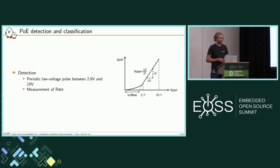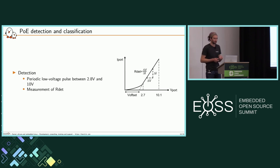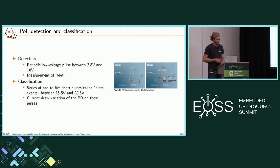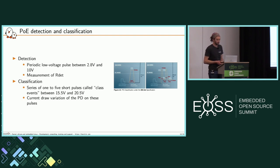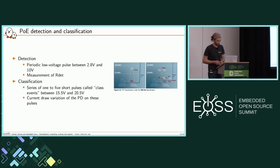Automatic detection is made through resistor detection. The PSE sends a few pulses, and detection of the rising edge of these pulses determines whether it's a powered device or not. Then we do a classification to know the power the device is requesting — which class to use. It also uses pulse events called 'class events' with higher voltage, 15 to 20 volts, and measures the current draw variation on these pulses. For Type 3 or Type 4 devices, there is a first long pulse called the 'long class event' or 'first class event.'